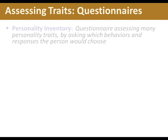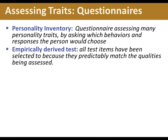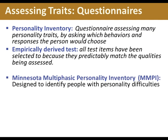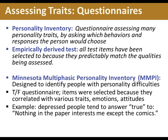For assessing traits, we use personality inventories — questionnaires assessing many personality traits by asking which behaviors and responses a person would choose. Empirically derived tests select items that predictably match the qualities being assessed. The MMPI (Minnesota Multiphasic Personality Inventory) is designed to identify people with personality difficulties through a true-false questionnaire. For example, depressed people tend to answer true to: 'Nothing in the paper interests me except the comics.'